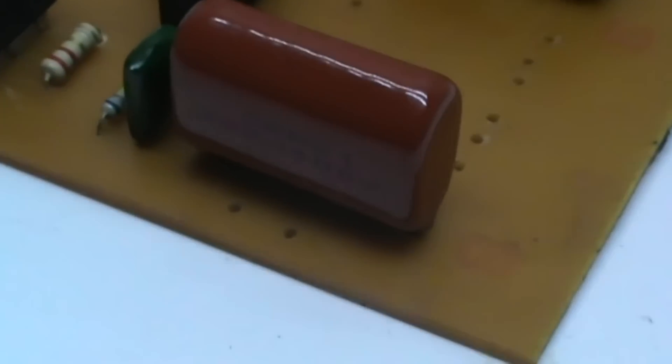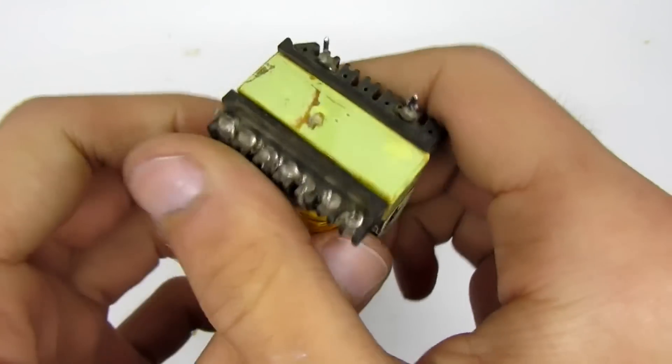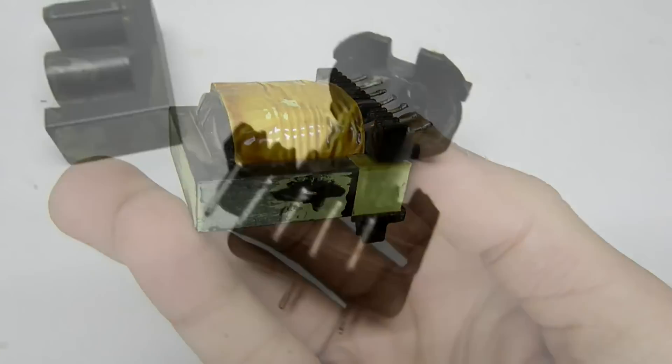Half-bridge capacitors are 2.2 microfarad, 400 volt, but can be from 1.5 microfarad. Power transformer took from 450 watt ATX format unit.